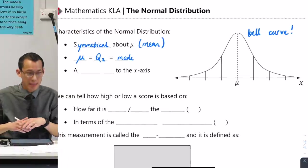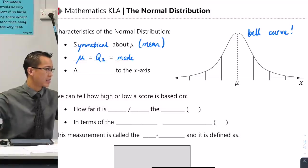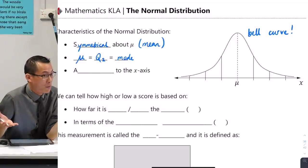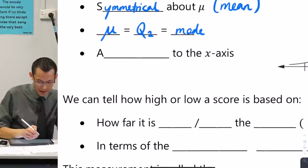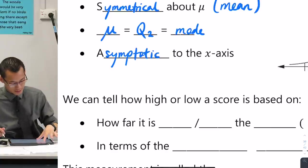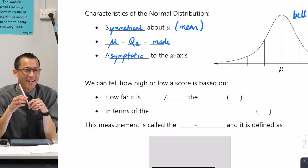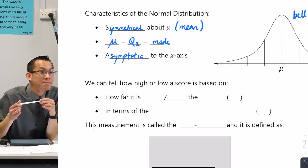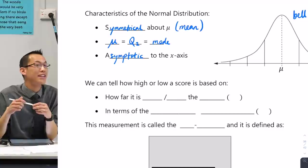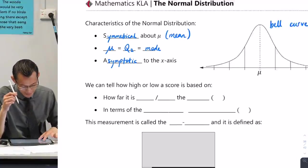And the other thing you notice is that the edges of the bell, if you like, they get closer and closer to the x-axis, but they never reach. We have a name for that. We call it asymptotic. A-S-Y-M-P-T-O-T-I-C. Asymptotic. Well, actually, some people spell it without the P, but anyway. Say that again. Asymptotic. So that's the adjective for asymptote.